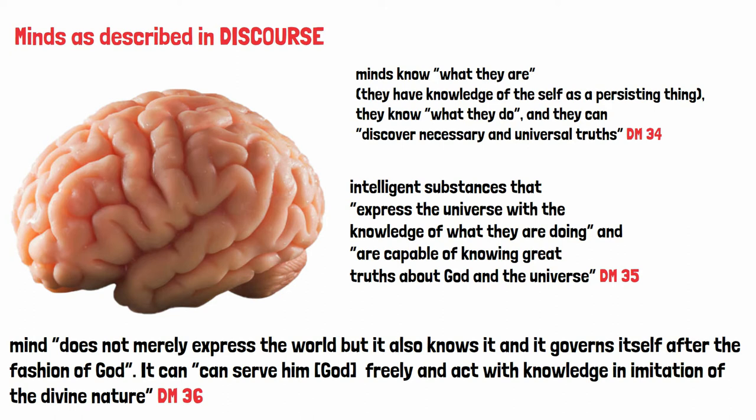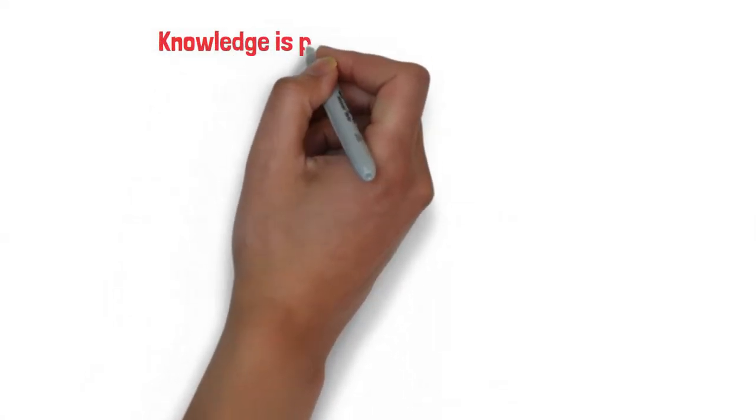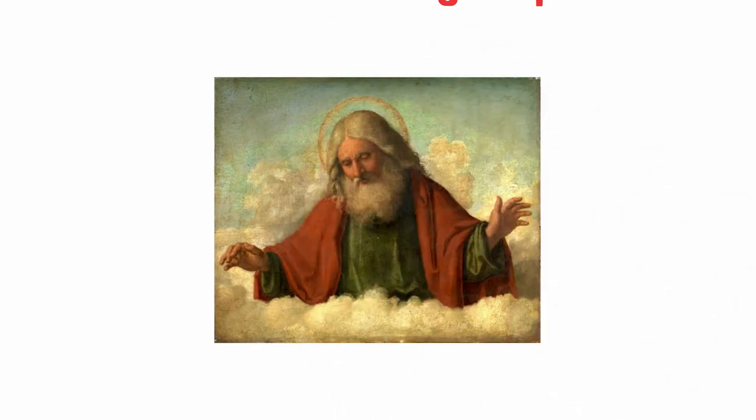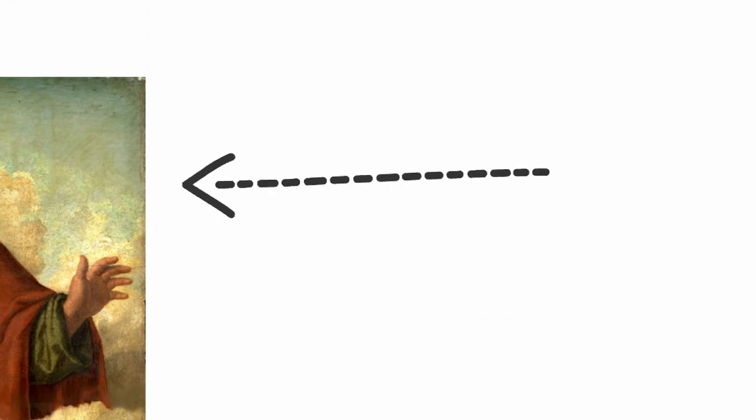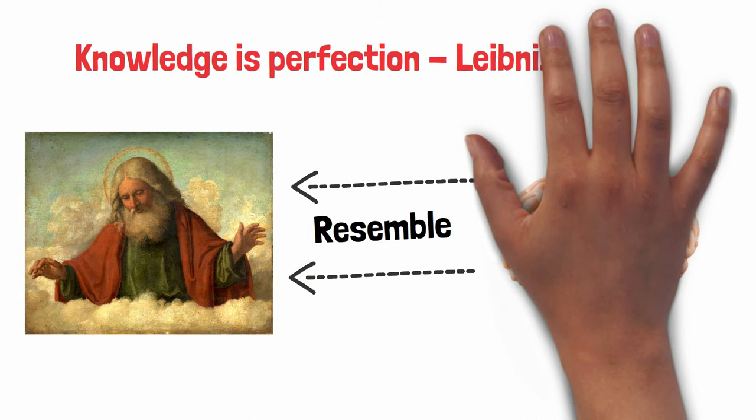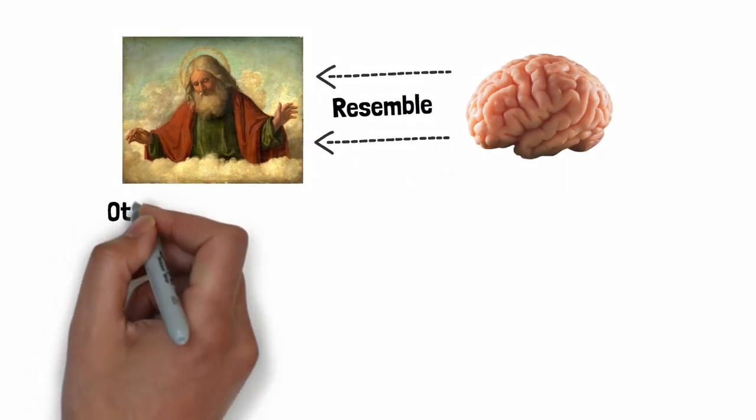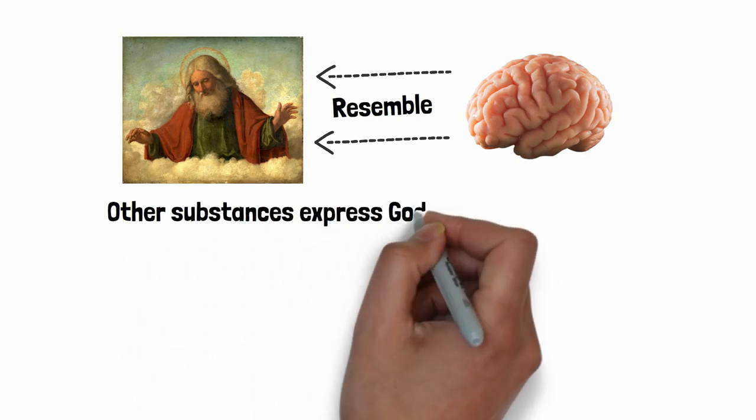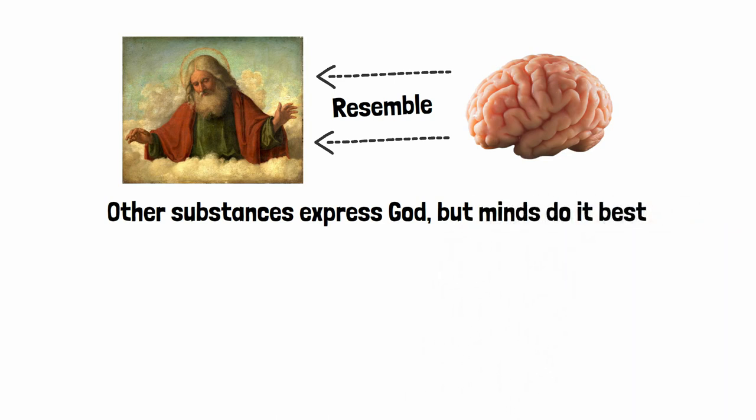Furthermore, in DM 36, a mind does not merely express the world but it also knows it and it governs itself after the fashion of God. It can serve God freely and act with knowledge in imitation of the divine nature. This possession of knowledge is related to minds being the created substances that possess moral qualities. Knowledge is, for Leibniz, a perfection. God has this and all the other perfections to the highest degree, but minds have more of it than other finite substances do. Thus they resemble God more greatly. Minds have less knowledge than God, but other substances have no knowledge at all.